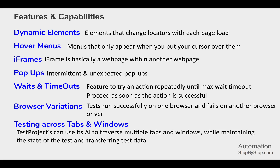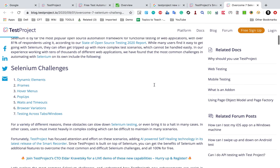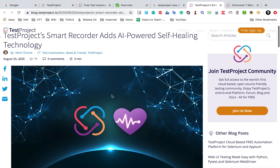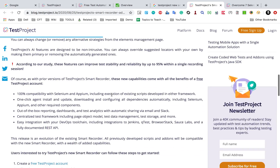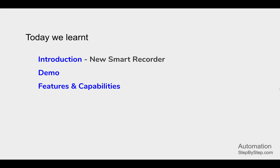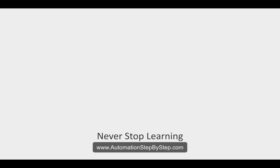These are the main features of the new recorder with AI capabilities. I will have a separate video discussing the AI smart healing features in more detail — covering dynamic elements, hover menus, and backend property changes. References are provided where you can check all these features and the Selenium challenges the new recorder handles. The smart recorder's AI-powered self-healing technology can find elements even when there are changes. If you have any questions, leave them in the comments and I will answer as soon as I can. Thank you for watching.